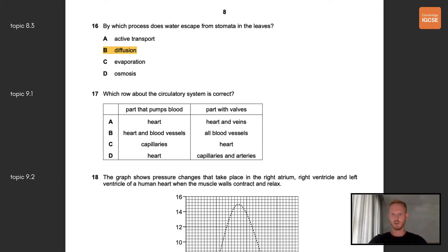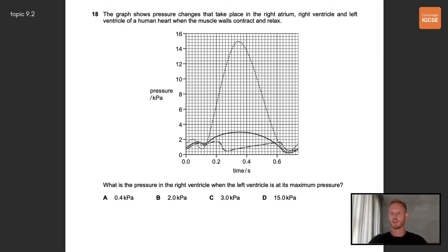Question 17, which row about the circulatory system is correct? The first column is the part that pumps blood which is obviously the heart and the second column is the part with valves and that is the heart and veins. So the correct answer is A. Number 18, the graph shows pressure changes that take place in the right atrium, right ventricle and left ventricle of a human heart. What is the pressure in the right ventricle when the left ventricle is at its maximum pressure? The left ventricle pumps blood throughout the entire body and therefore generates much more pressure than the other chambers. The left ventricle is at its maximum pressure at around 0.35 seconds. At this time the pressure in the right ventricle is around 3 kilopascal so the correct answer is C.